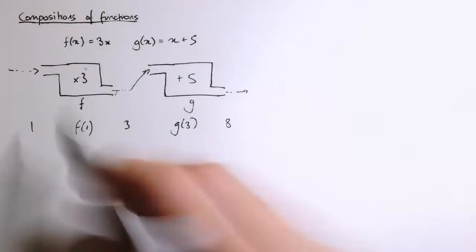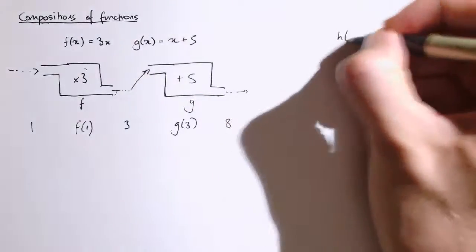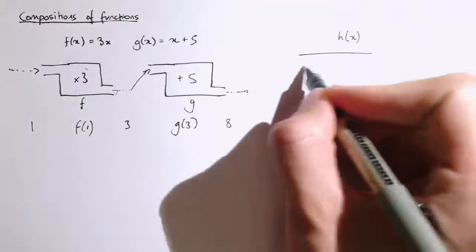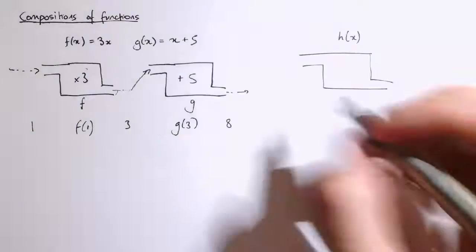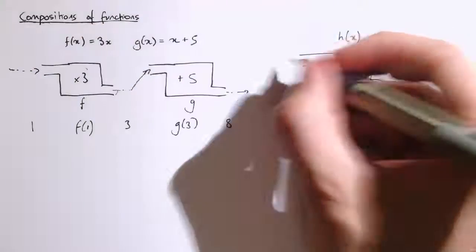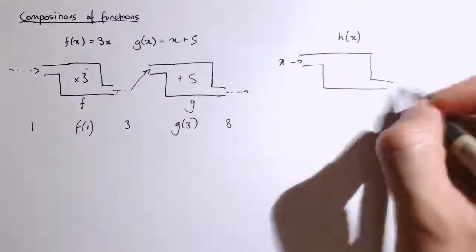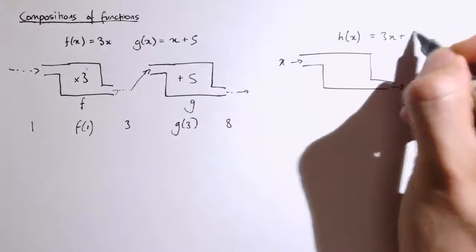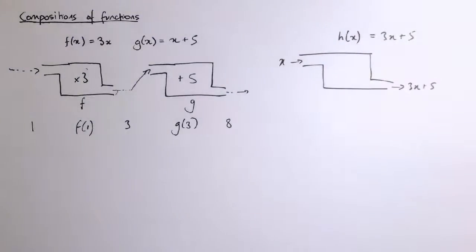And we could replace this combination of two functions with just one single function. So maybe I'll call it h, and what h does is multiplies by 3 and then adds 5. So actually, the rule for h is that h of x equals 3x plus 5, because it's multiplied by 3 and then it's adding on 5. We can see that combination there.